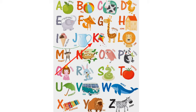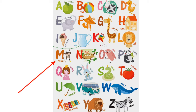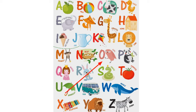K for Kite, L for Lion, M for Monkey, N for Nest, O for Oil.